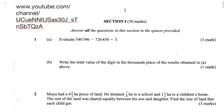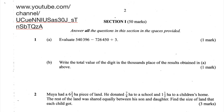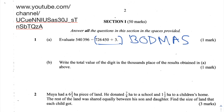The first question is for one mark and asks us to evaluate 540,396 minus 726,450 divided by 3. To answer this we need to remember BODMAS — brackets, over division, multiplication, addition and subtraction — which tells us we need to answer the division part of the question first, and then do the subtraction.